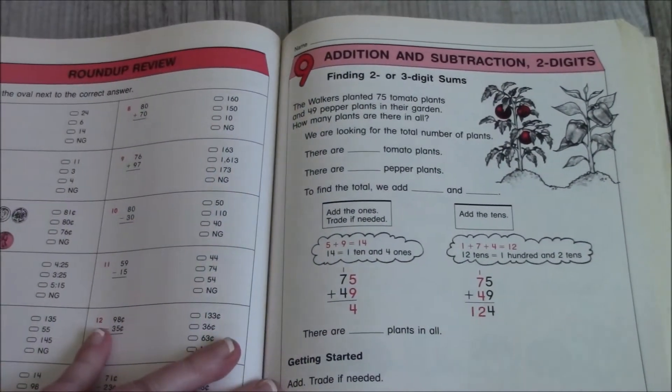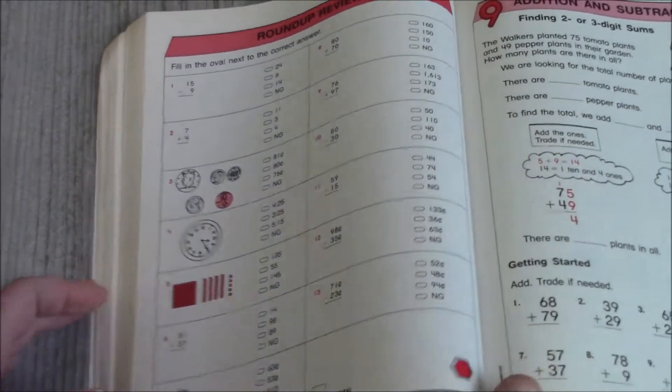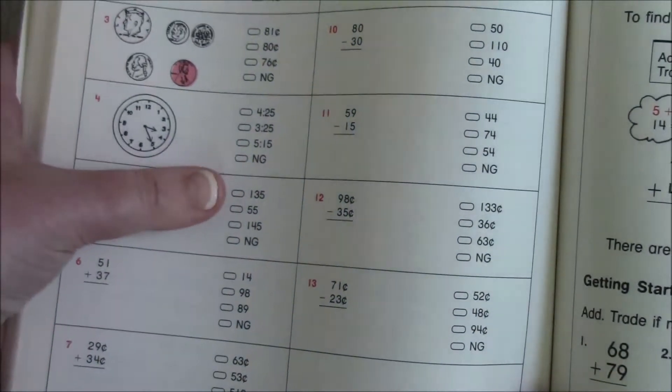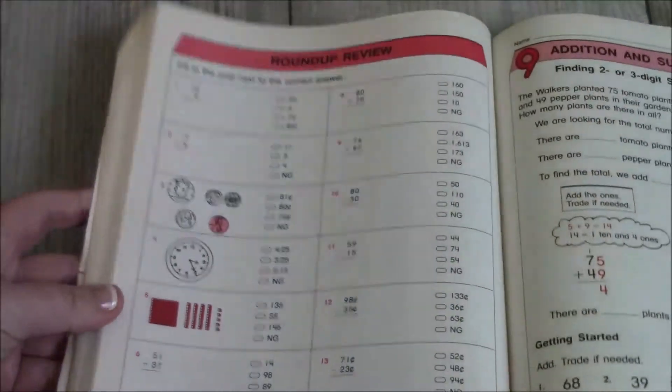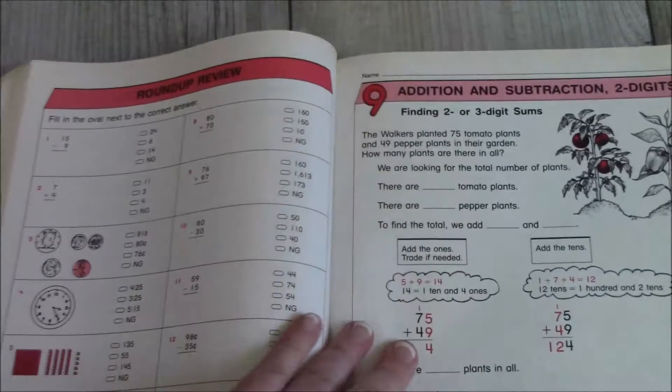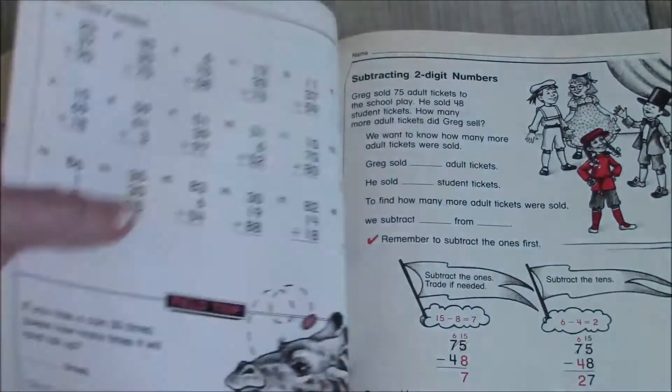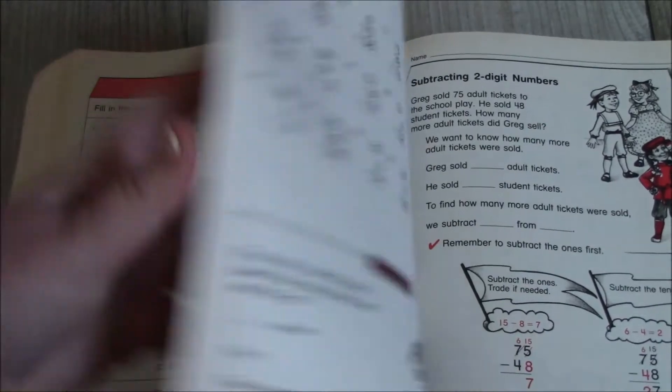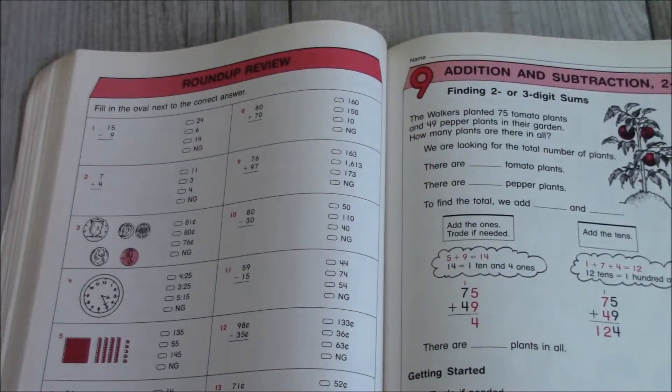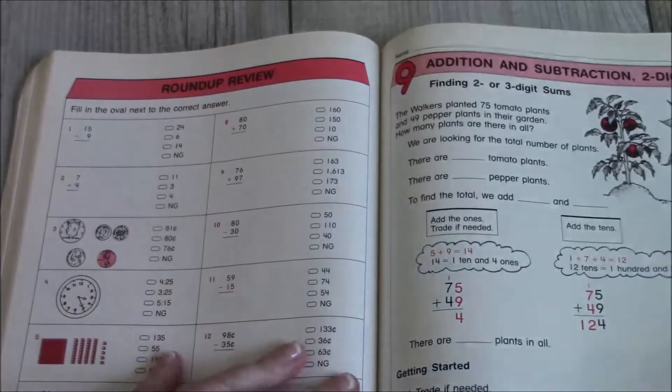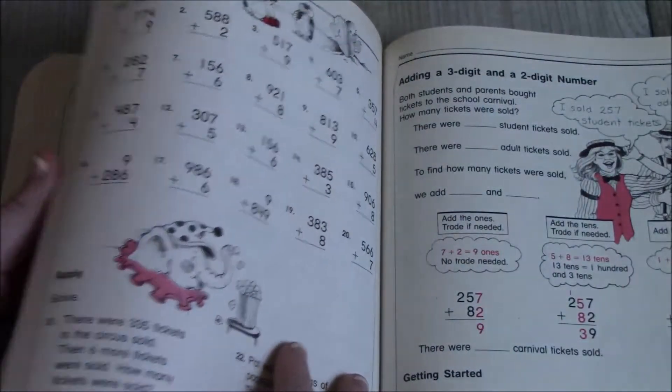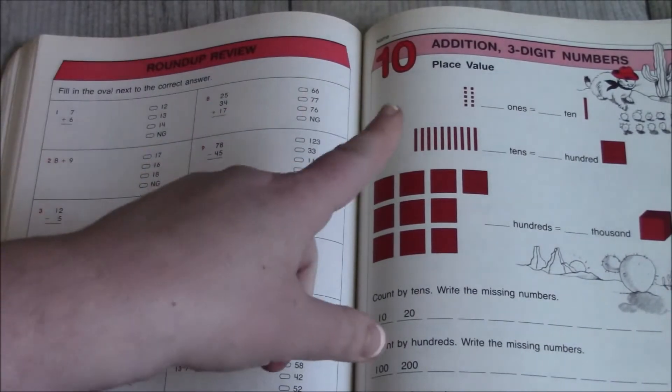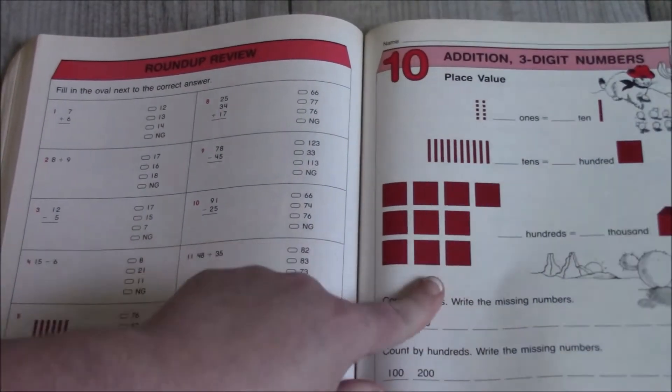Chapter nine, and I wanted to point out now when we're doing our chapter reviews, we have a different look for tests. We're starting to get into more kind of official looking tests. Chapter nine is addition and subtraction with two-digits, and we'll even get into three-digits. So finding two or three-digit sums. Here we go. Ten addition three-digit numbers, and we're going to be working with hundreds.